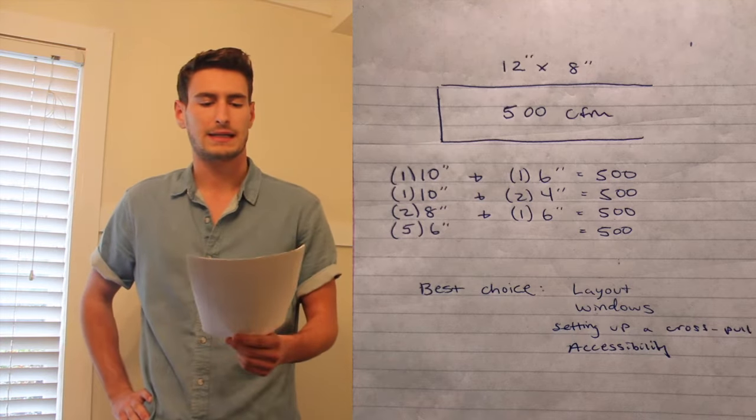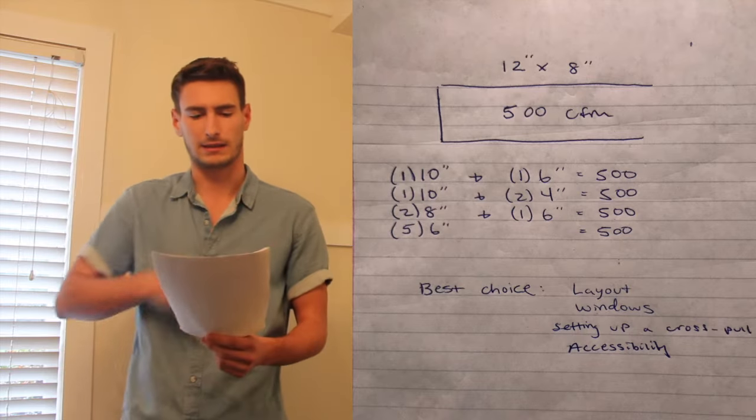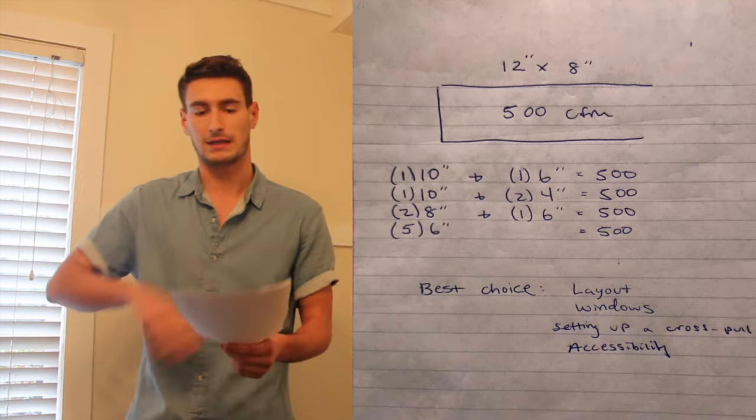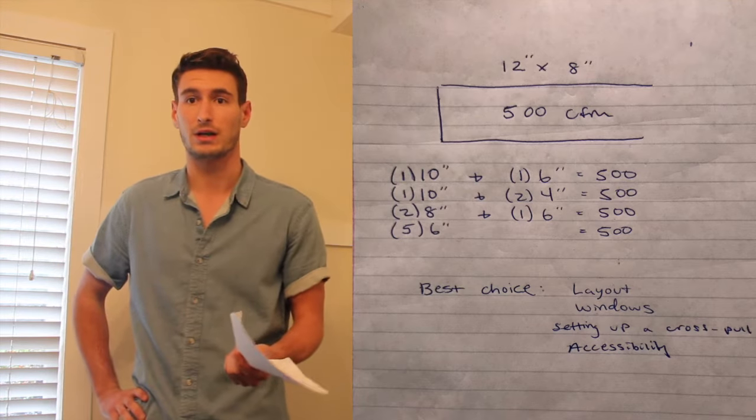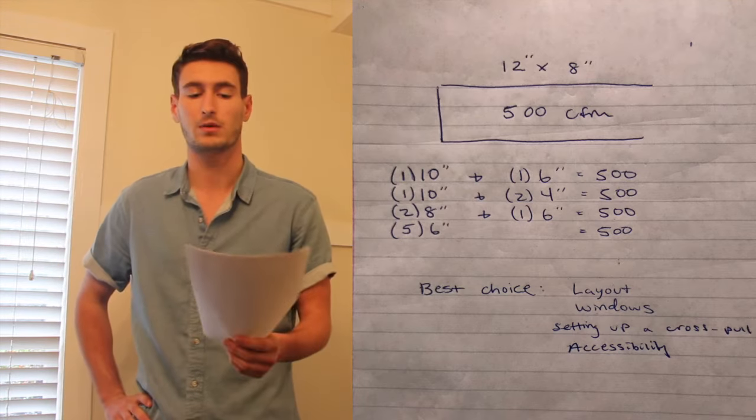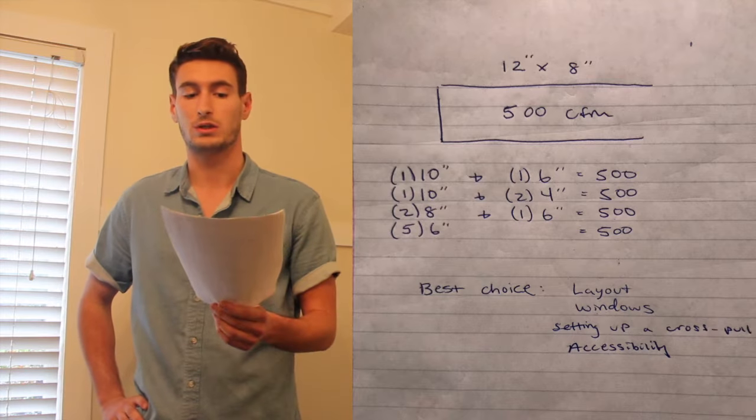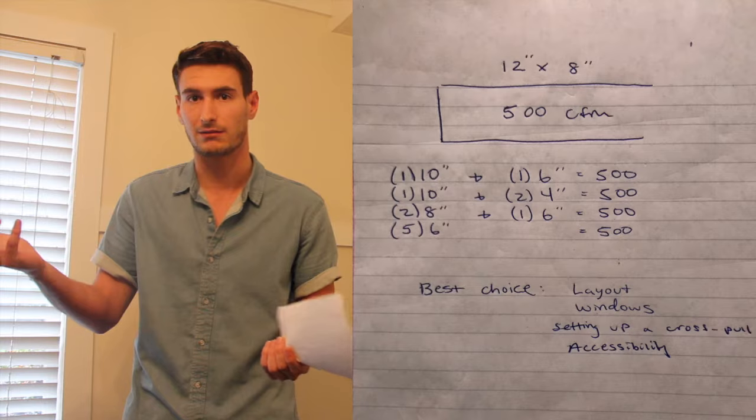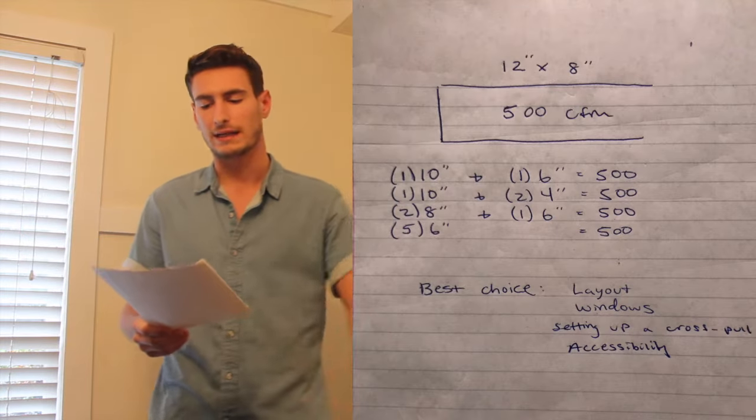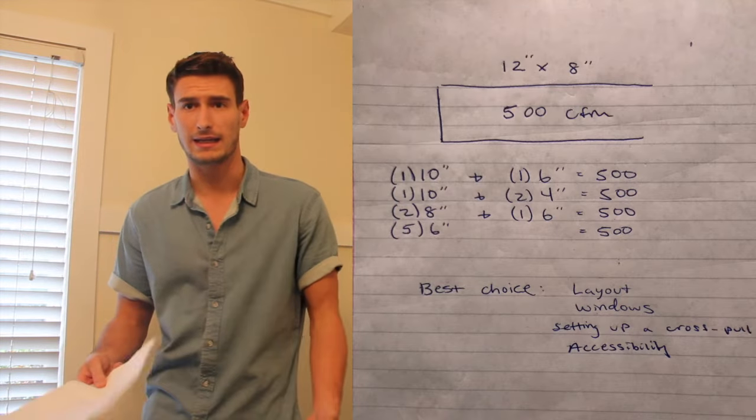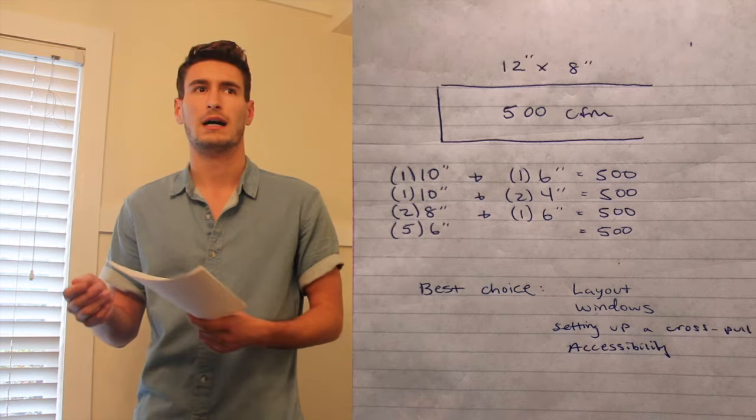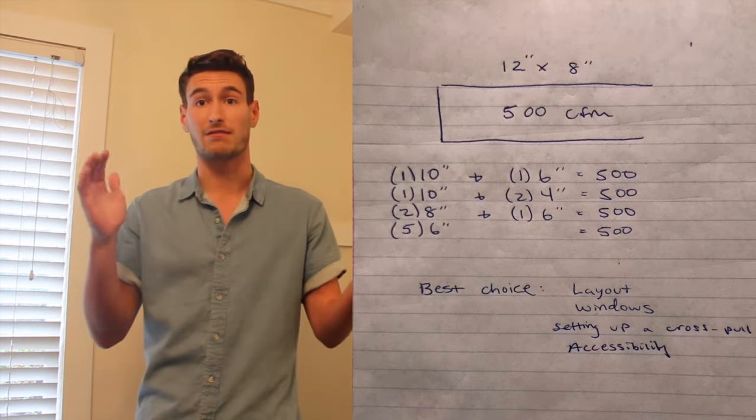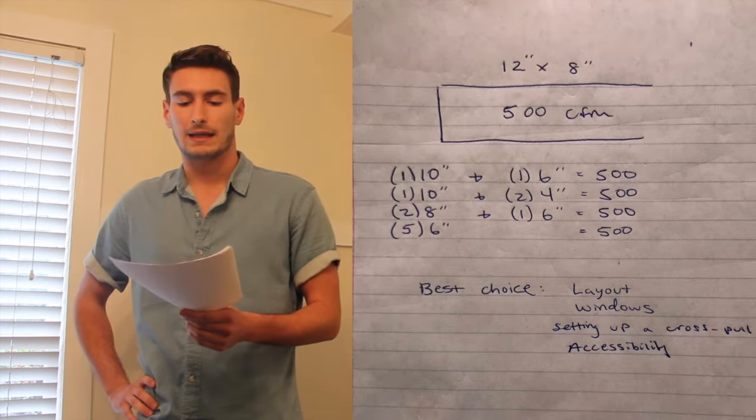So I have a breakdown just below the system here that says 1, 10 inch and 1, 6 inch. So if you just follow that duct chart, you got the 10 inch, which processes 400 cubic feet per minute, the 6 inch which processes 100, which gives you your total 500. So there's a few different breakdowns there of how you could actually lay out the ductwork and the different options you have in terms of how many runs can come off of that 500 trunk line.